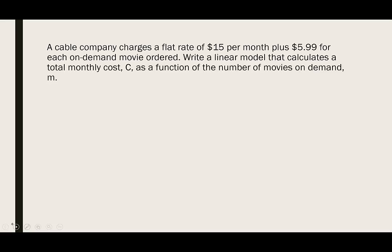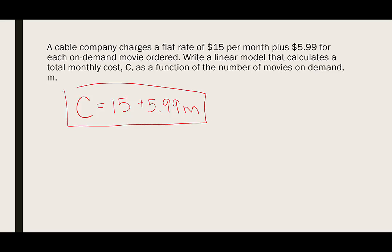For this one, C is our monthly cost. The flat rate of $15 means we're charged $15 whether we watch any movies or not, plus 5.99 for each movie ordered, which we're calling M. So the model is C = 15 + 5.99M. That would be the linear model to represent that situation.